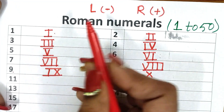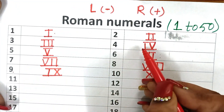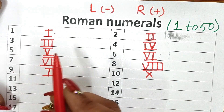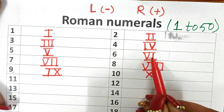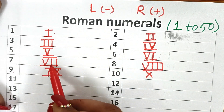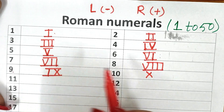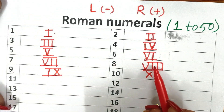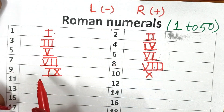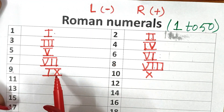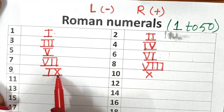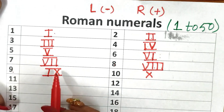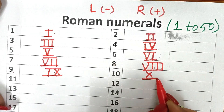So let's repeat it once. This is 1, 2, 3, 4. 4 is 5 minus 1. Then 5, 6 — 6 is 5 plus 1. Now 7 is 5 plus 2. Now 8 means 5 plus 3. Now 9: we subtract 1 from 10 to get 9. This is 10, and I have written 1 on the left side meaning I am subtracting it. So 9 is IX and 10 is X.